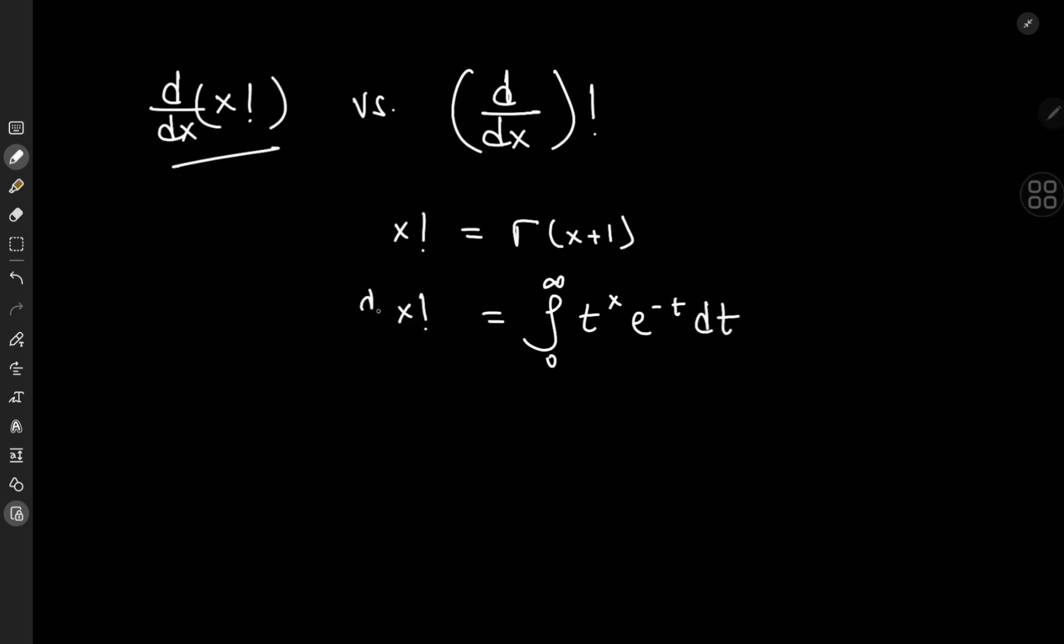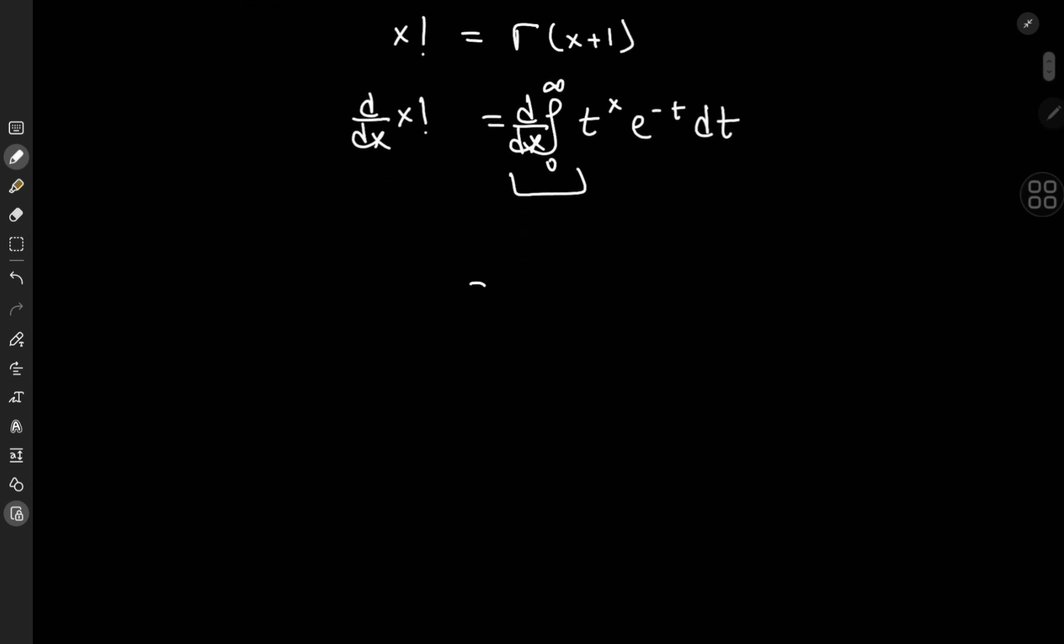The question of differentiating the factorial boils down to just differentiation under the integral sign using the Leibniz rule. So we have the integral from 0 to infinity of the partial derivative with respect to x of t to the x times e to the negative t dt. The e to the negative t term is a constant for partial differentiation purposes, and we need the derivative of t to the x, which is t to the x times the natural logarithm of t. This is the integral that represents the derivative of the factorial function.